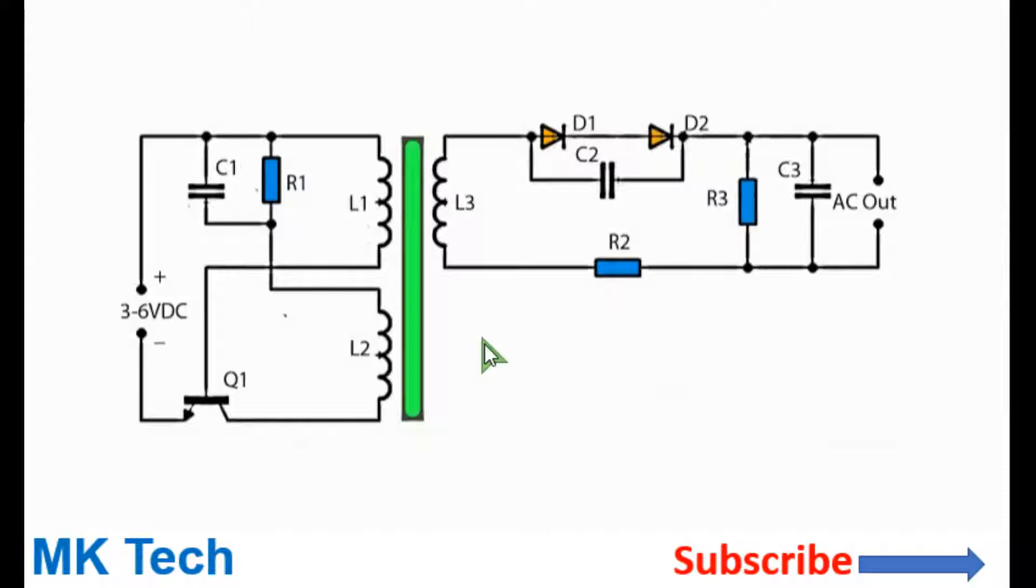Welcome to MK Tech everyone. I'll be showing you how you can make a simple yet really reliable high frequency high voltage inverter circuit with just one transistor and a handful of components. For the power supply you can use just one lithium ion or polymer battery or any other source with 3 to 6 volts.